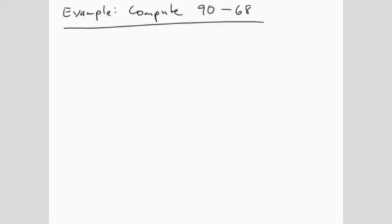Compute 90 minus 68. We are going to make a comparison between calculating this using columns and calculating this using the two-step approach. We're going to start by looking at this calculation in columns, and we're going to write out the steps that had to be taken.